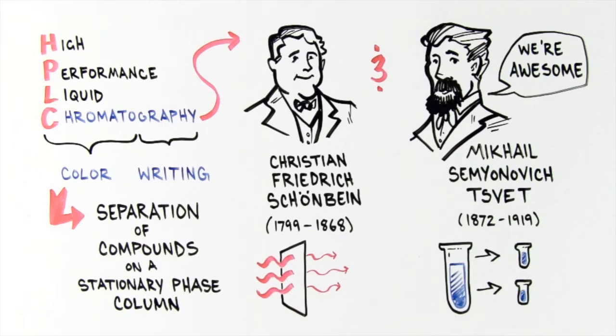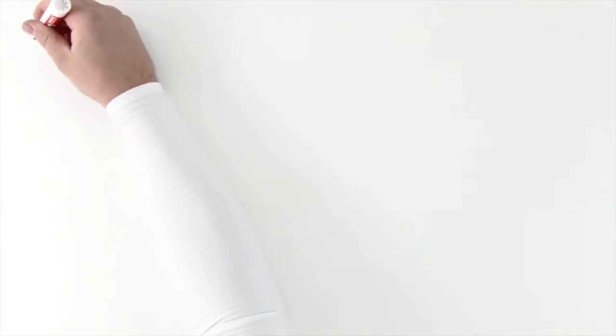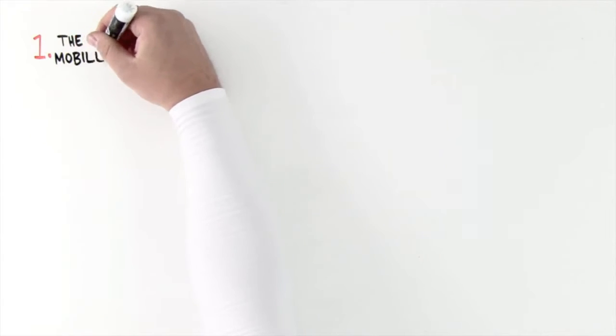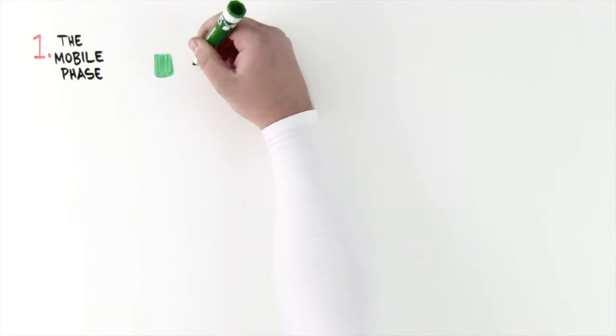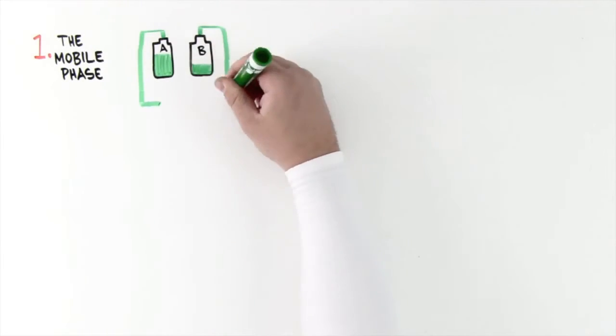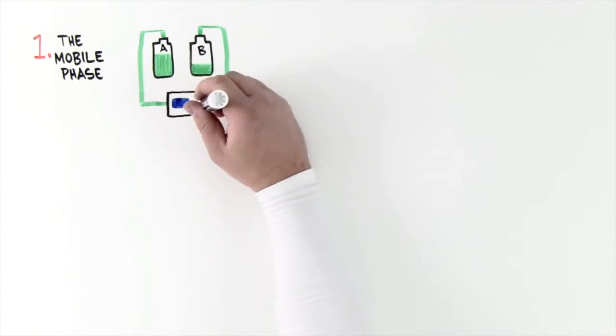The basic components of an HPLC system consist of: 1. The mobile phase. This is the solvent that runs continuously through the system and pushes the sample through the column. The solvent is contained in a reservoir, located at a higher elevation than the pump.